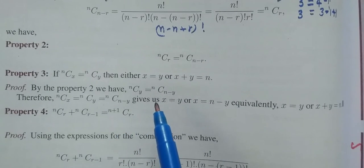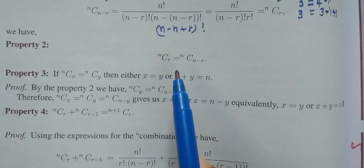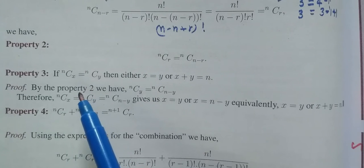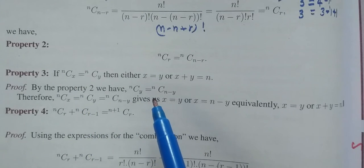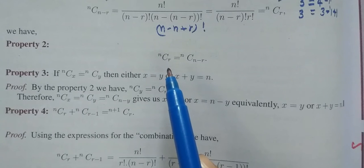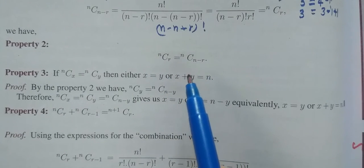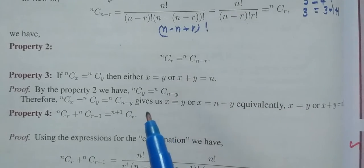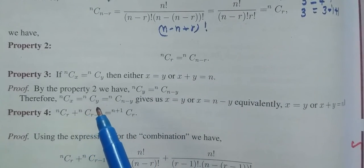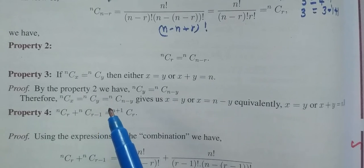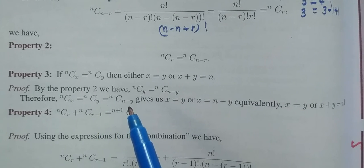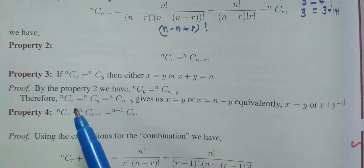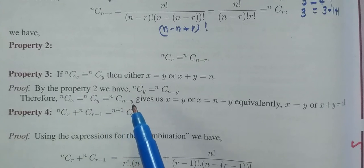By property 2, ncr equal to ncn-r. In the ncy equal to ncn-y. What is ncr? ncr equal to ncn-r. So in this way, ncy equal to ncn-y. Therefore, ncx equal to ncy. We will convert it. So, which gives us the denominator term, x equal to n minus y.